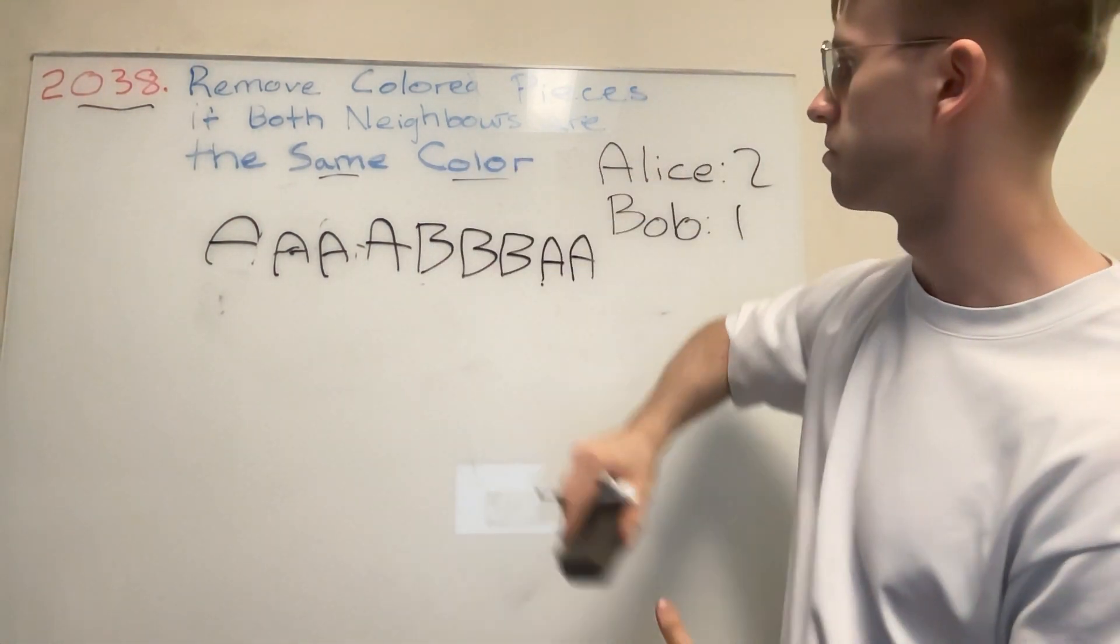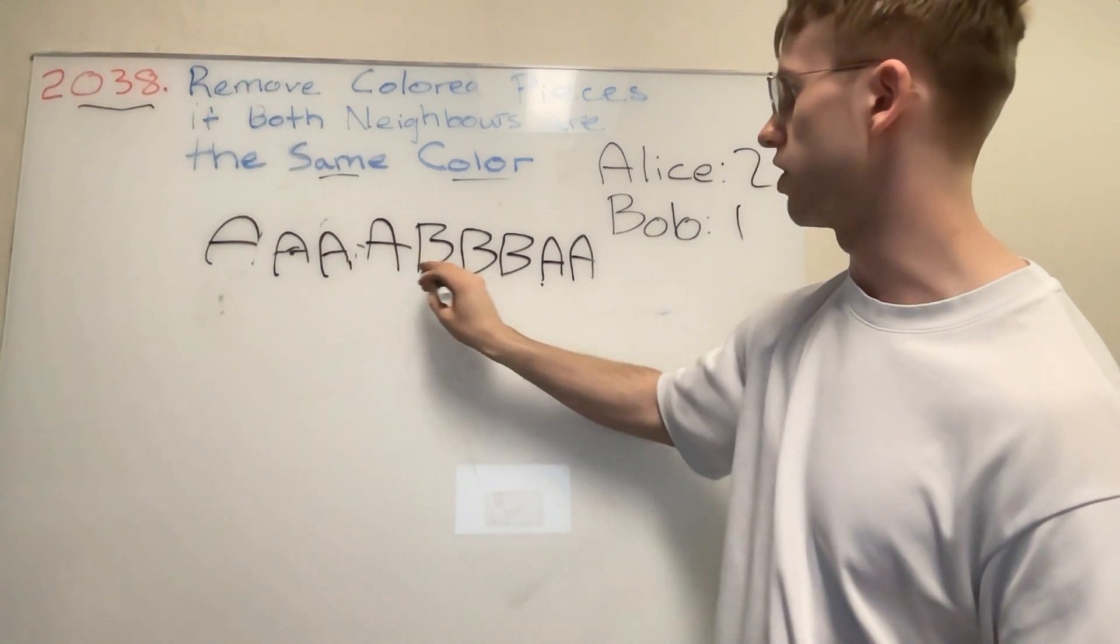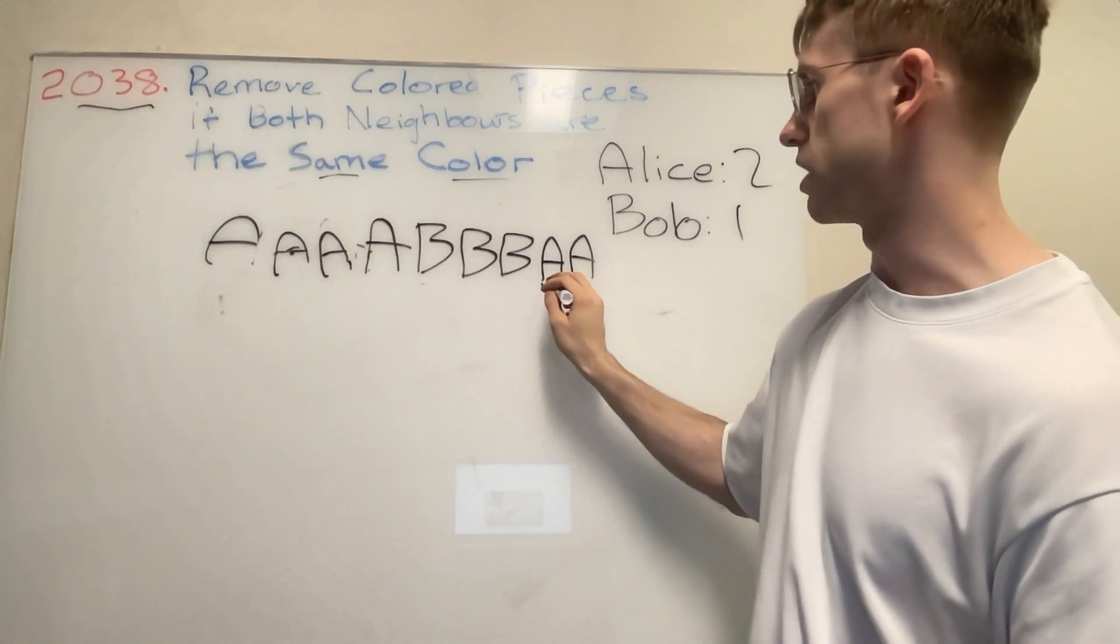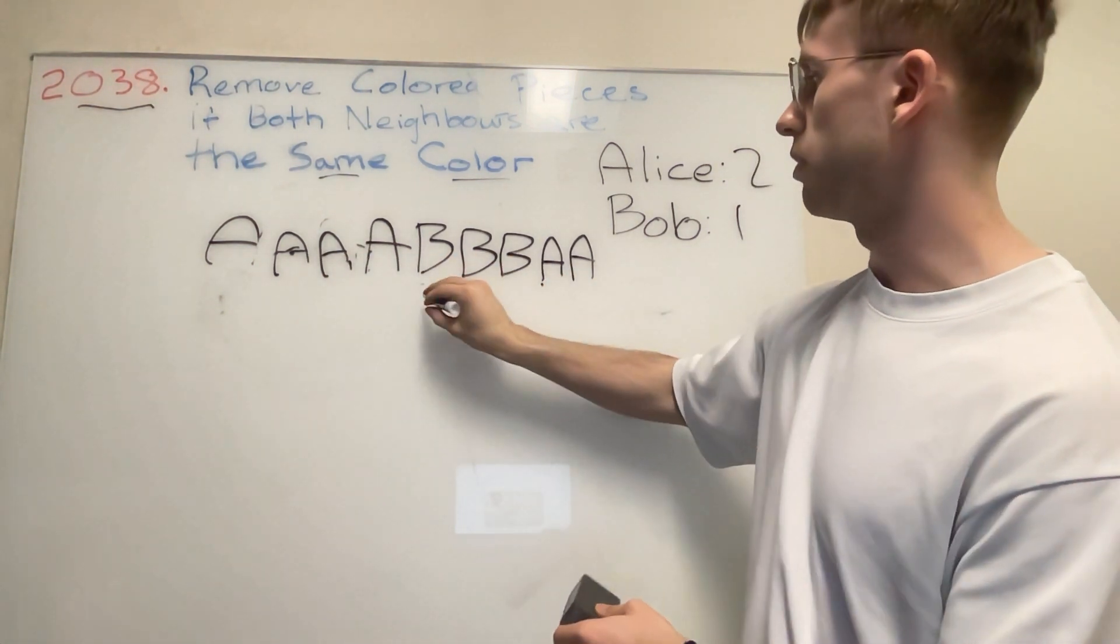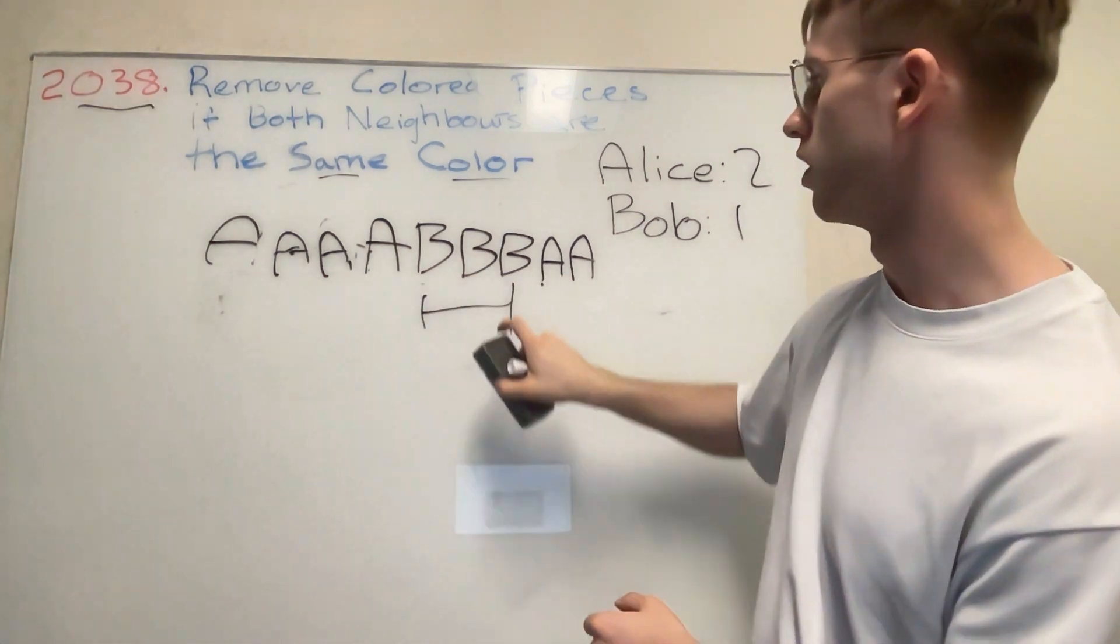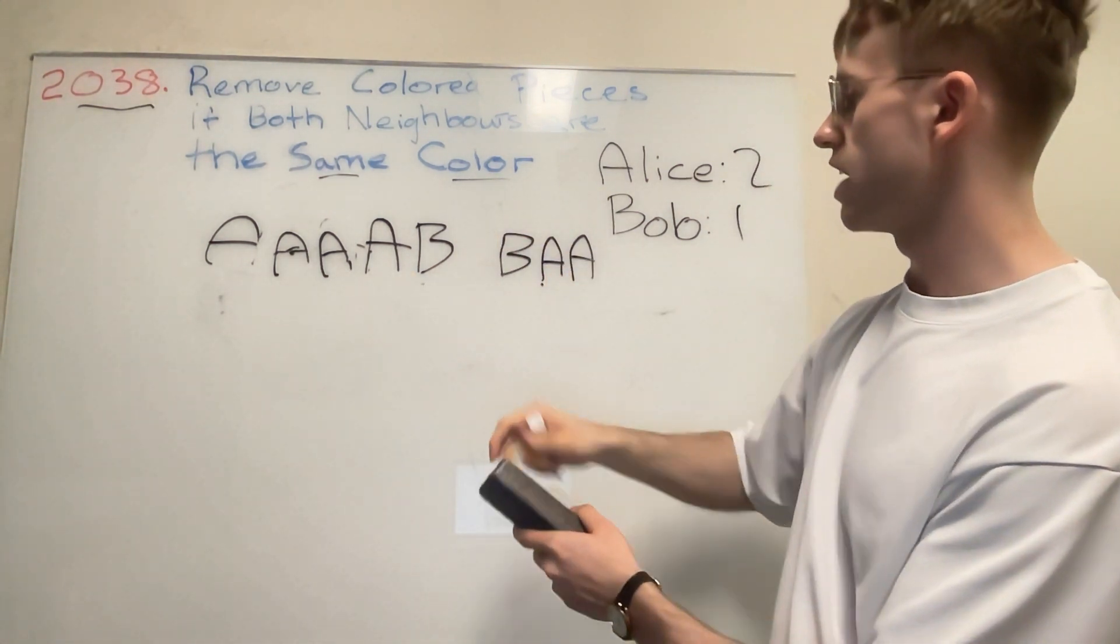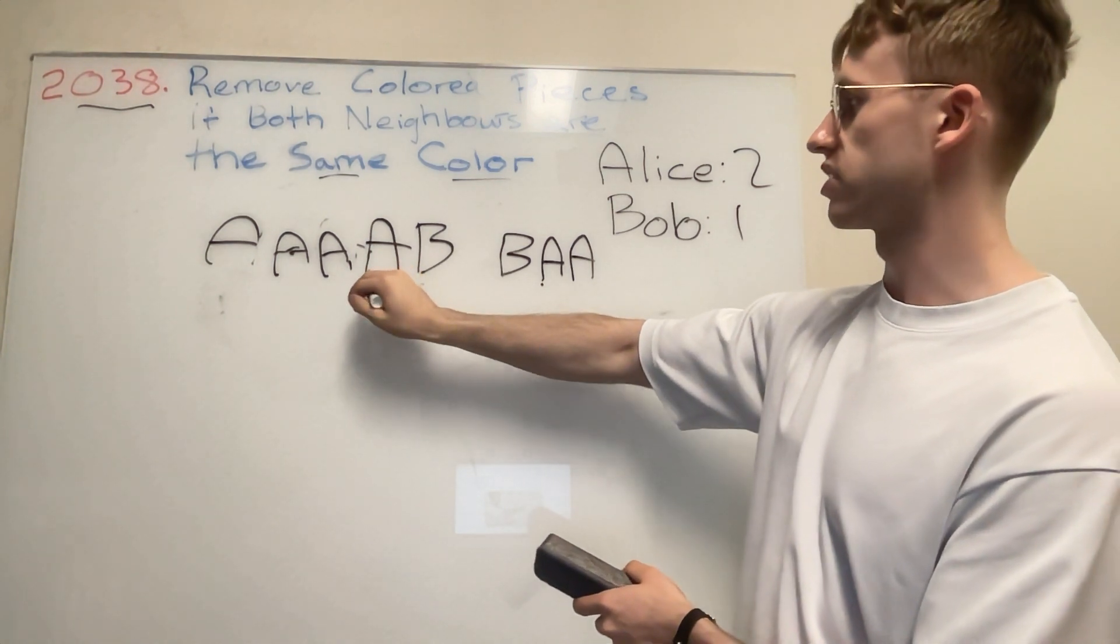But it doesn't actually work that way, because you would see here that whenever there is a barrier between the letter A's and B's, even if Bob plays and removes this B, it's never going to allow Alice to get any access to the A's beyond these B's.